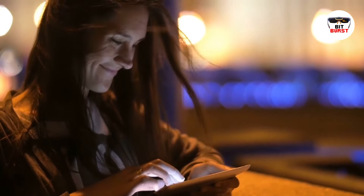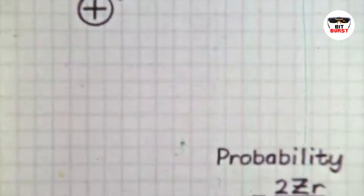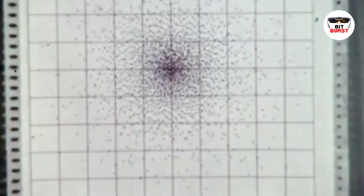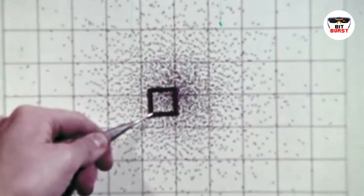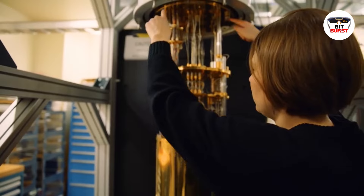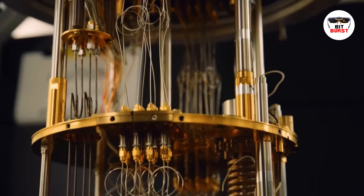Now let's explore the core principles of quantum computing: qubits, superposition, and entanglement. A qubit, the fundamental quantum information unit, can be zero, one, or both simultaneously, thanks to superposition. This quantum phenomenon allows a qubit to exist in multiple states concurrently, much like a coin landing on its edge, enabling quantum computers to process numerous possibilities at once.